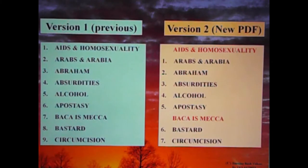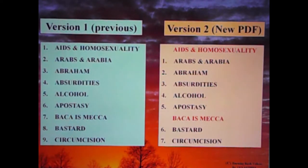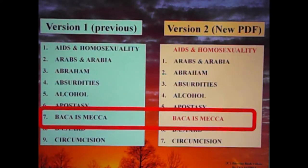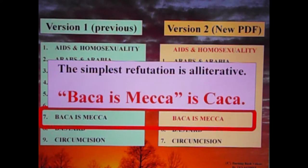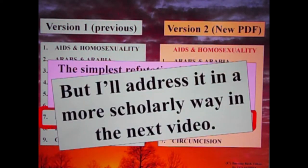Comparing them in context, one is AIDS and homosexuality, which is not in the new PDF. We have Arabs in Arabia, Abraham, absurdities, alcohol, apostasy. Next, we have Bacca is Mecca, which is not in the new PDF. The simplest refutation is alliterative — Bacca is Mecca is Kaka. But I'll address it in a more scholarly way in the next video.